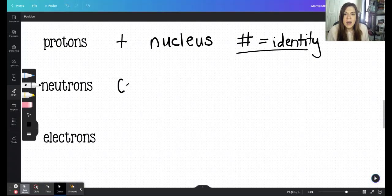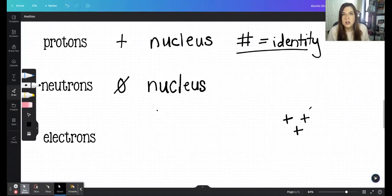Now, neutrons have no charge. They are neutral, and they are also found in the nucleus. The thing about them is that they really don't serve much of a purpose, except that they prevent the protons from repelling each other. If you just put a bunch of protons together like this, all of these positives are going to try to repel each other, because positives don't like to hang out with other positives.